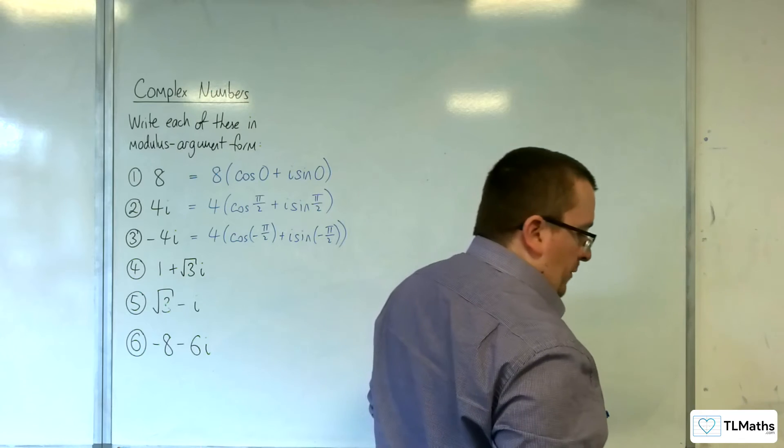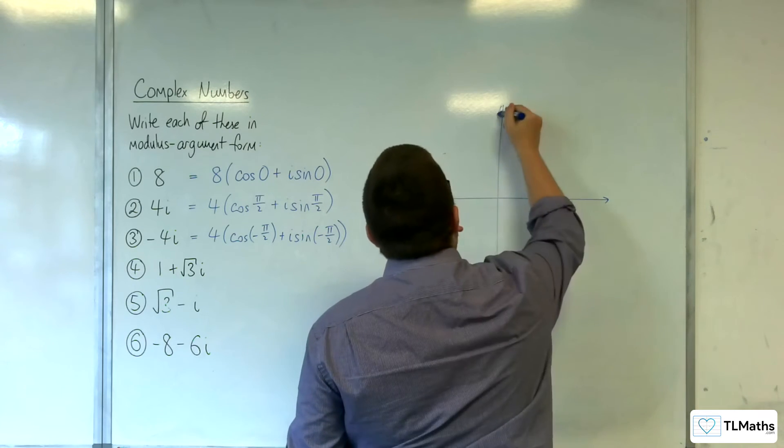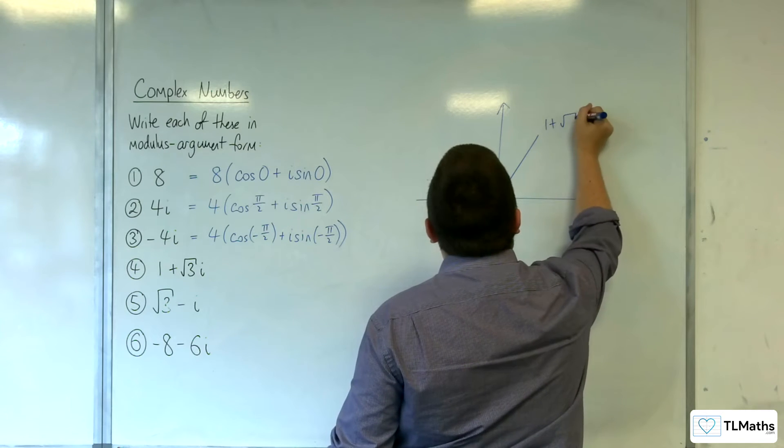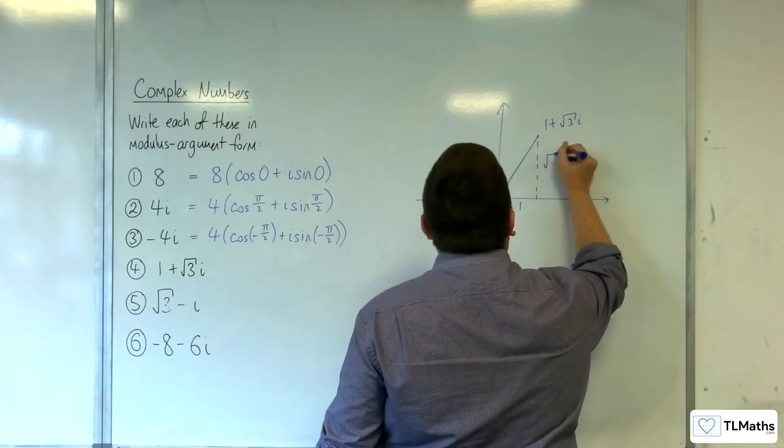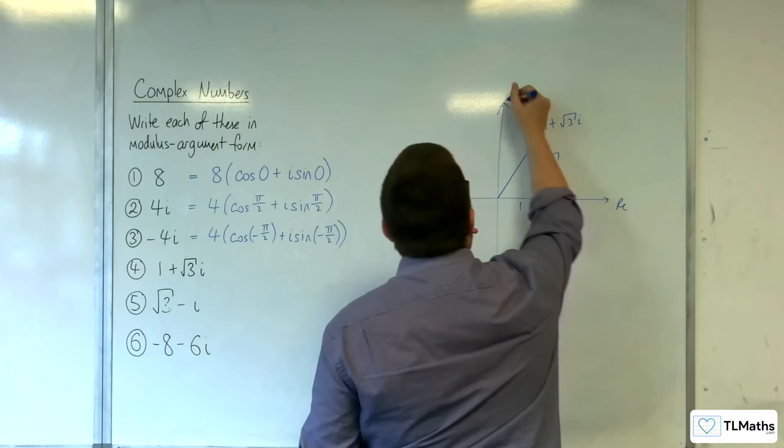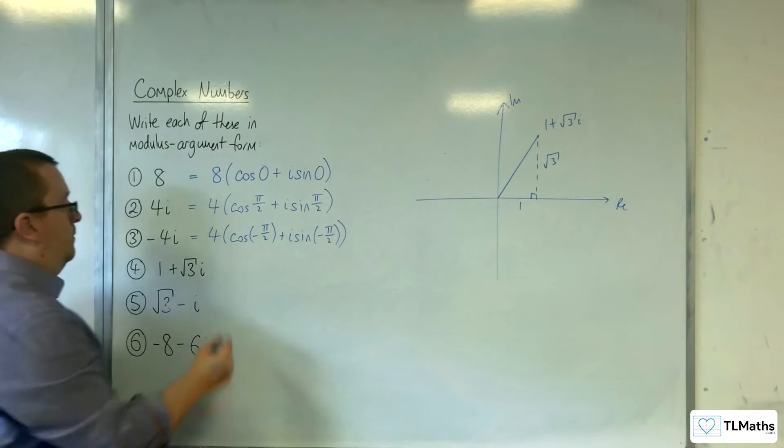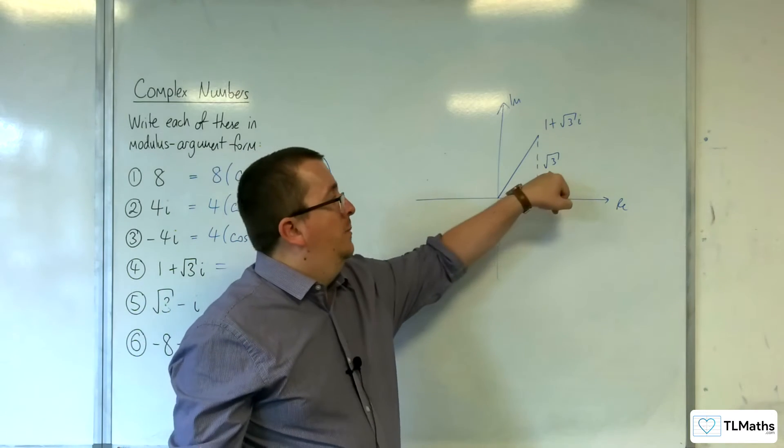Number 4: 1 plus √3i. So 1 along and √3 up, something like this. So 1 along, √3 up.